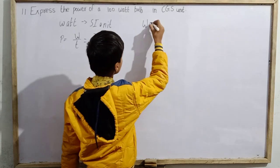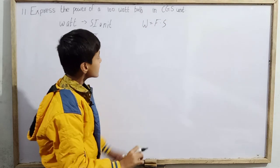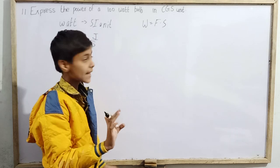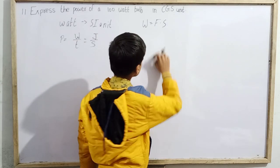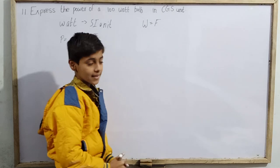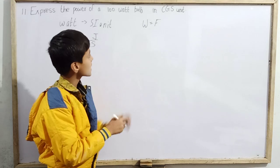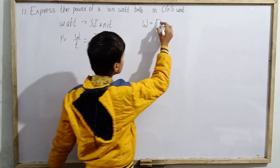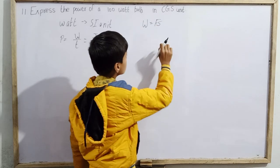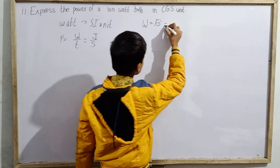We define work as the dot product of force and displacement. Since we are studying just the introduction to physics, the dot product will be studied in the next chapter. So we simply define it as force into displacement.